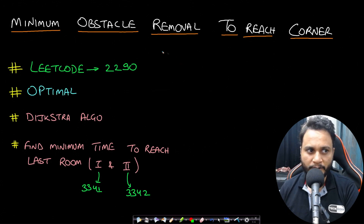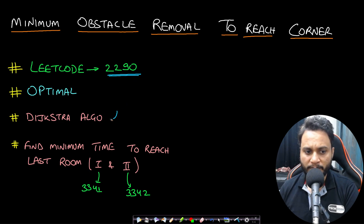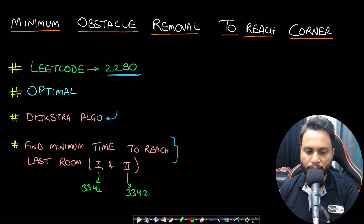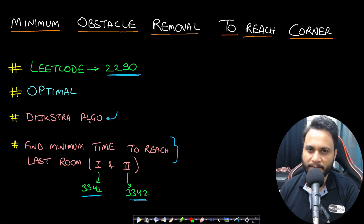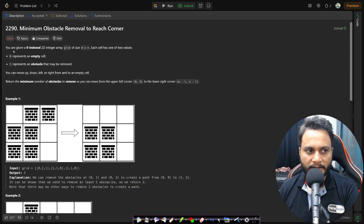Welcome back to Tech Dose. In this video we will look at the Minimum Obstacle Removal to Reach Corner problem, which is LeetCode number 2290. A prerequisite before solving this is to watch my video on Dijkstra's algorithm. You can also watch a very similar problem, Find Minimum Time to Reach Last Room one and two, LeetCode 3341 and 3342. All links are in the description below.